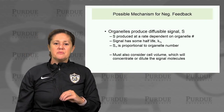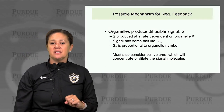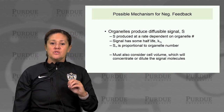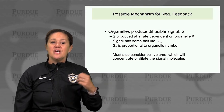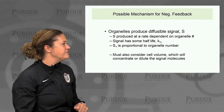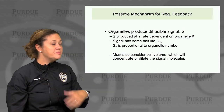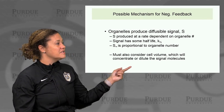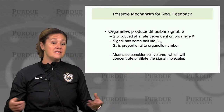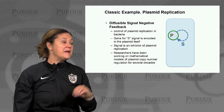One possible mechanism for negative feedback is that organelles could produce a diffusible signal S, produced at a rate dependent on the number of organelles present — so more organelles means more S produced. That signal naturally has some half-life K1-half, resulting in a steady-state signal level proportional to organelle number. We would also need to consider cell volume, which will concentrate or dilute the signal molecules as the cell divides and its volume changes. This mechanism has been observed biologically, with the classic example being plasmid replication.